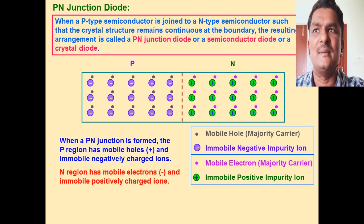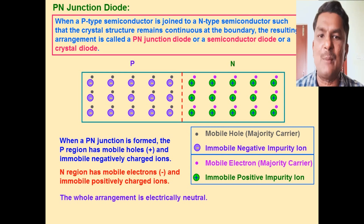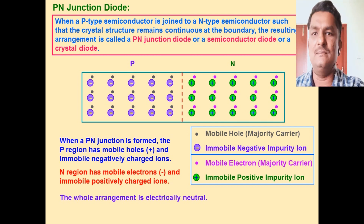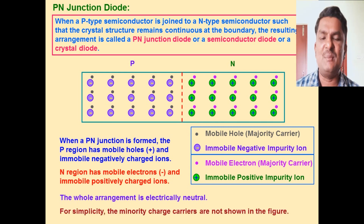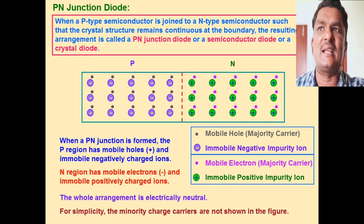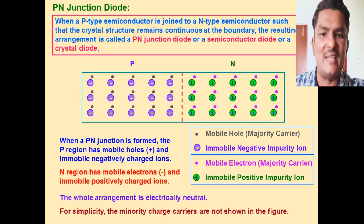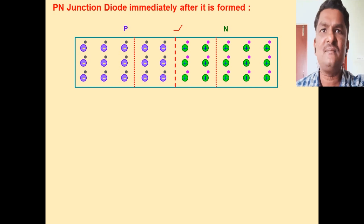When p-type and n-type semiconductors are suitably joined, a junction is formed called the p-n junction. The p-region has mobile holes and immobile negative charged ions, and the n-region has mobile electrons and immobile positive charged ions. This whole arrangement is electrically neutral because we are not applying any electric field or electric potential. Observe the diagram carefully — this is the important concept.